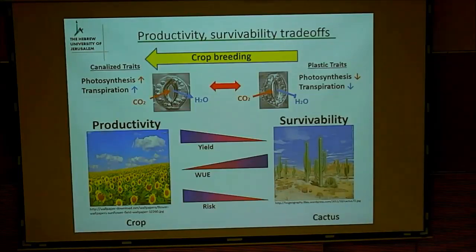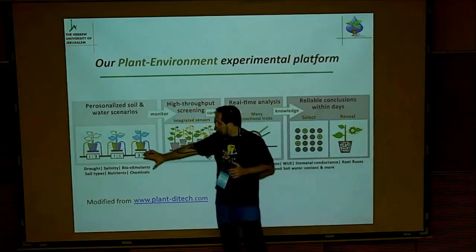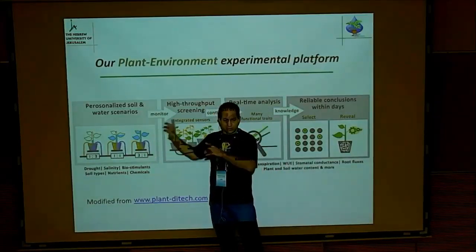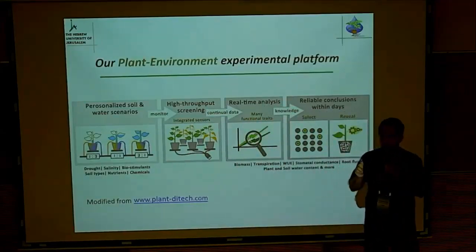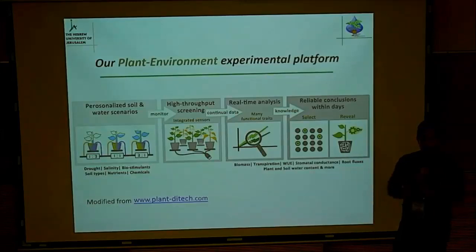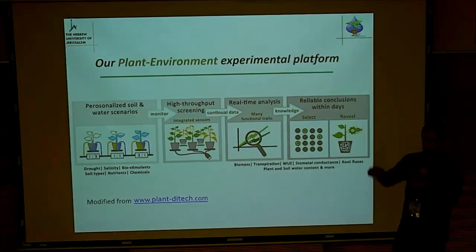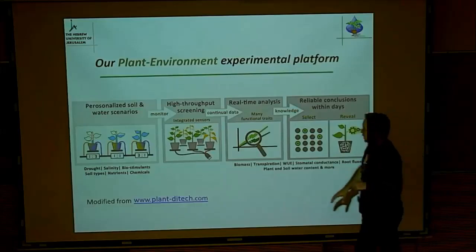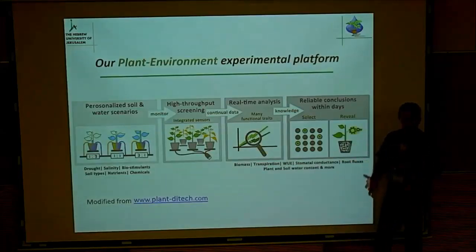Our algorithm is built on that: you have to define what you want to breed for. Properties like high stomatal conductance and high transpiration push toward the productive way; high water use efficiency pushes toward survival traits. We try to find something in the middle. To look for these traits, we use a system called Plant Array, belonging to the company Plant Ditech. The system allows us to control each and every one of our pots — each pot has its own controller and two valves, so we can give any pot any solution in any concentration.